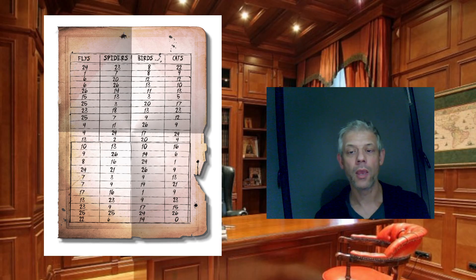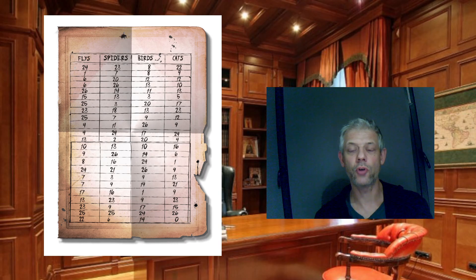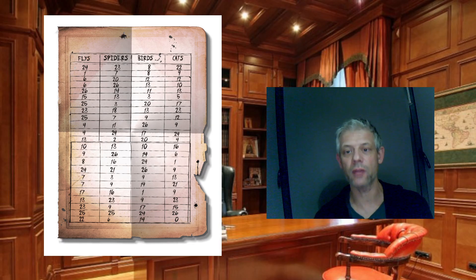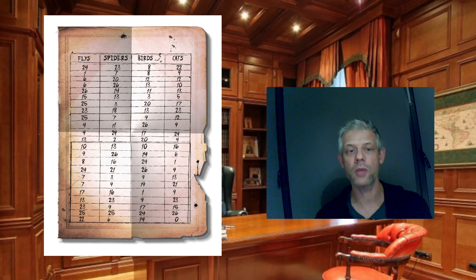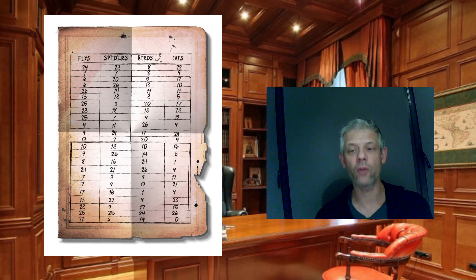Pour trouver la bonne clé, ce n'est pas évident. C'est ce qu'on appelle un code Vigenère. J'ai essayé de passer le code à la moulinette de certains décodeurs qui existent en ligne, et ça n'aboutissait à rien. Sachant que moi j'avais la clé et je savais quel était le message secret, je voulais essayer de voir s'il était possible de retrouver ce message, et j'ai eu beaucoup de difficulté à le faire.